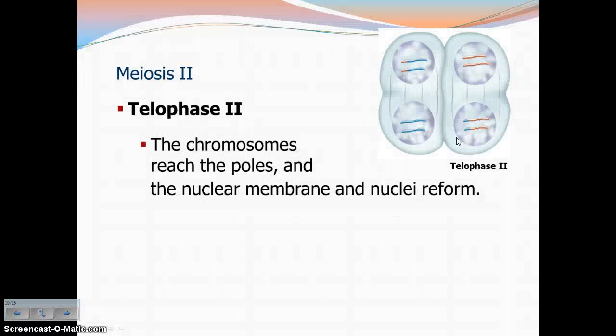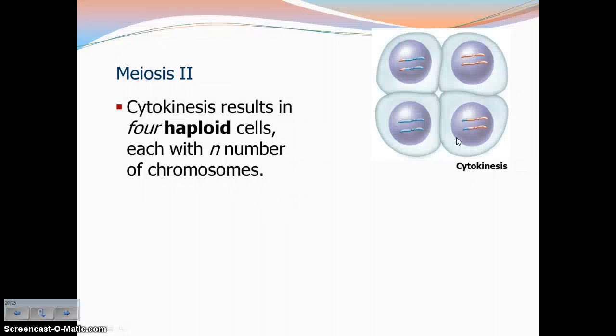Finally, we have telophase II, where the chromosomes have reached the poles, the nucleus is reforming, and the chromosomes are uncondensing, uncoiling back into chromatin. Until finally you have cytokinesis, which is the cutting of the cytoplasm, which results in four haploid daughter cells, each with that N number of chromosomes. So in humans, each one of these cells would have 23 chromosomes.